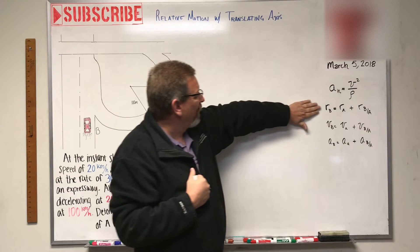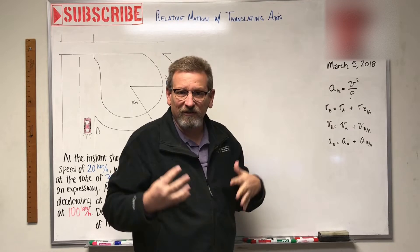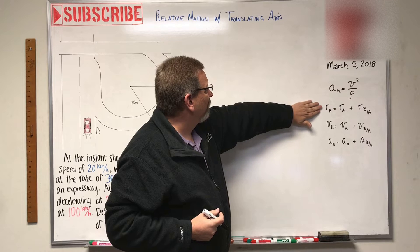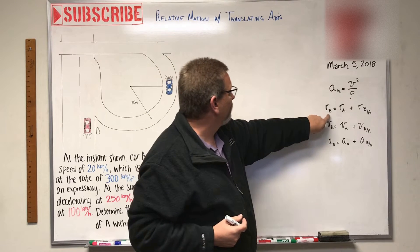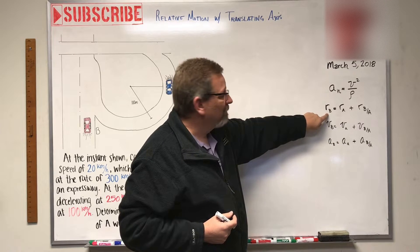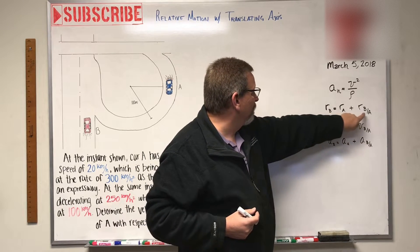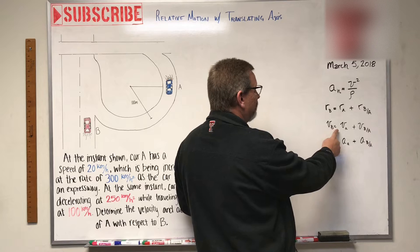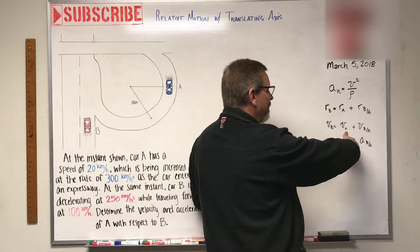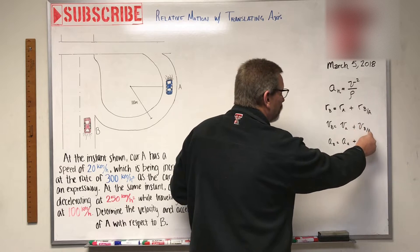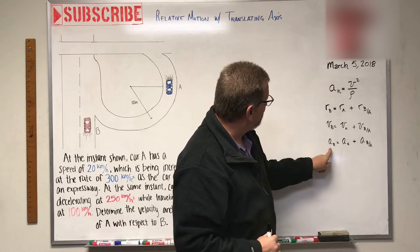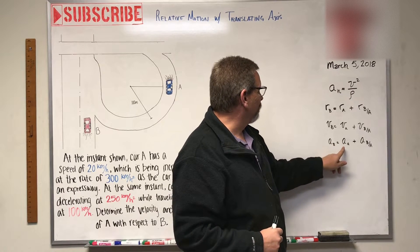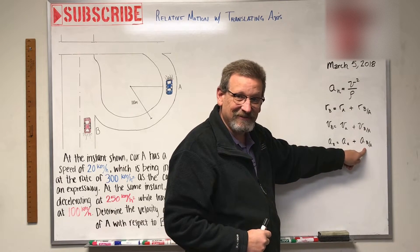We have some new relative motion equations. The position of B with respect to A, the velocity of B equals the velocity of A plus the velocity of B with respect to A, and the acceleration of B equals the acceleration of A plus the acceleration of B with respect to A.